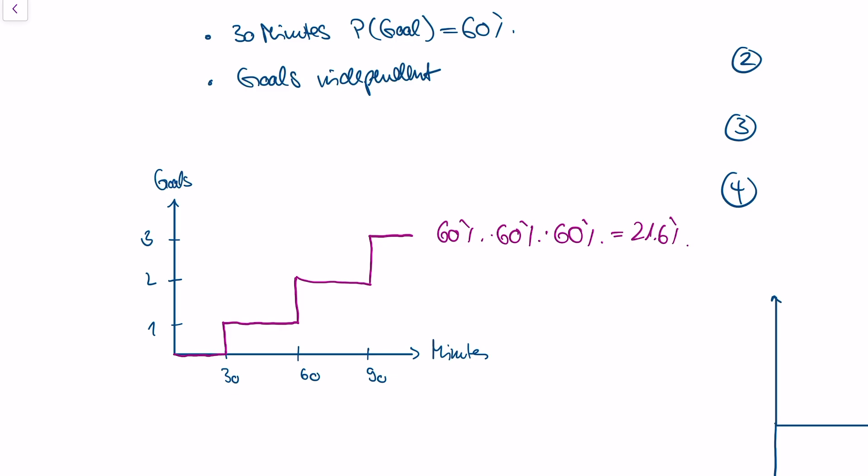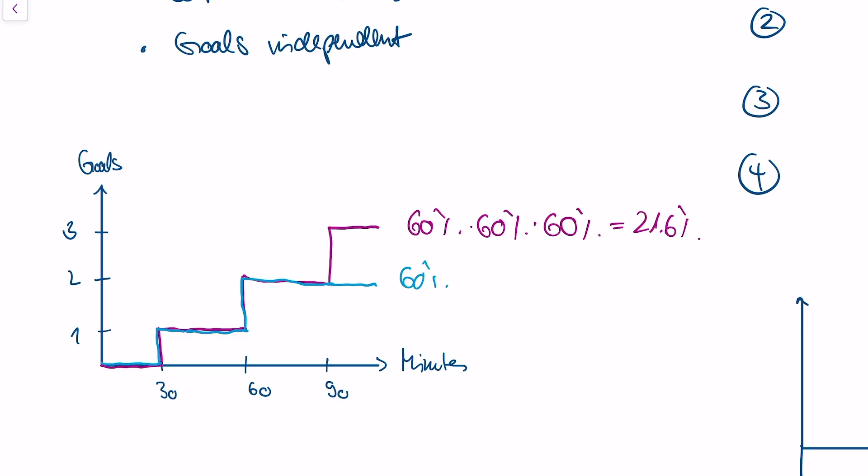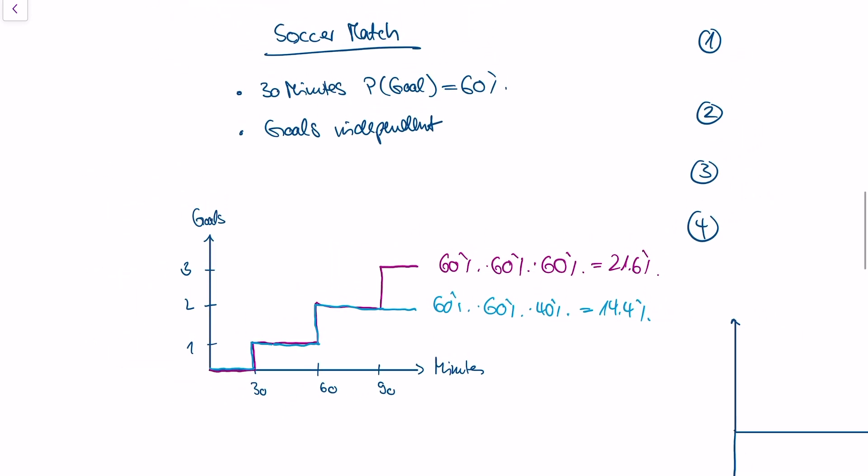Another representation of our stochastic process could be: no goal in the first 30 minutes, then a goal falls. At minute 60, a goal falls again. Then at minute 90, no goals fall—two goals in total. What's the probability that this is the sample path of our stochastic process? The probability is 60% times 60% times 40%, which is 14.4%. So this is a stochastic process.